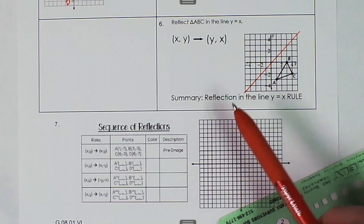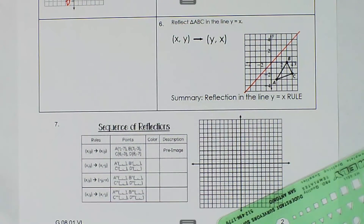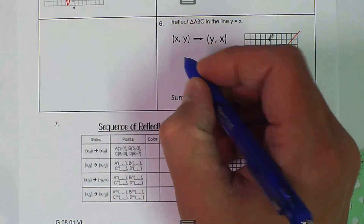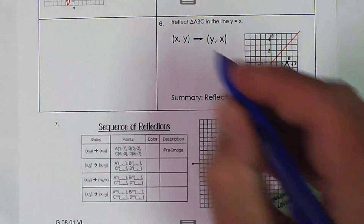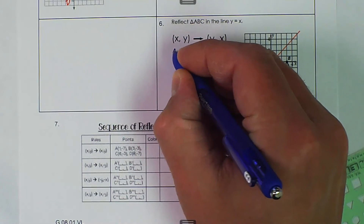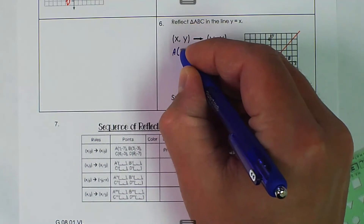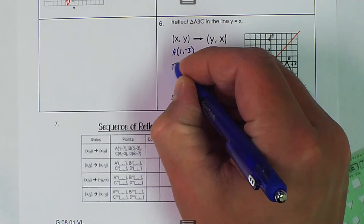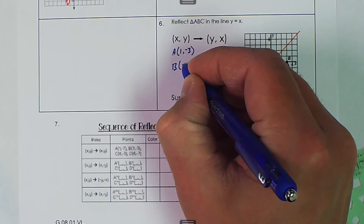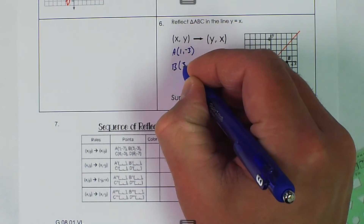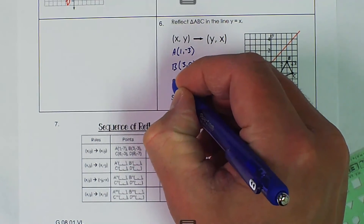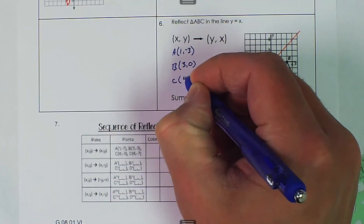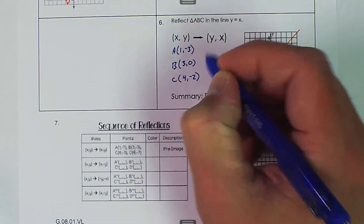It's easier to use the coordinate rule for this one because it's very difficult to count. First I'm going to write down the coordinates of A, B, and C — same as above: A is (1, negative 3), B is (3, 0), and C is (4, negative 2).